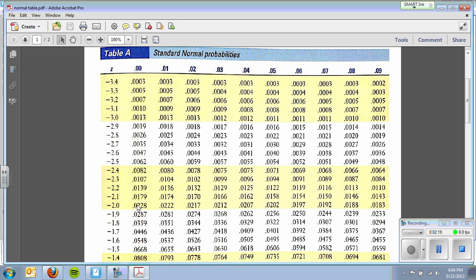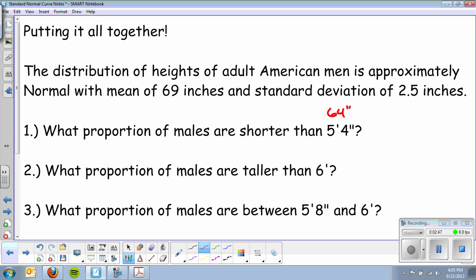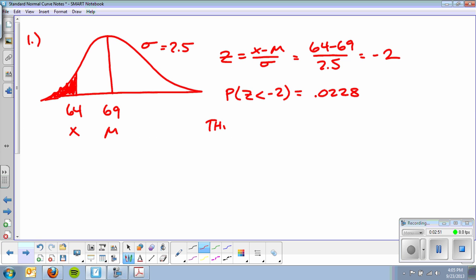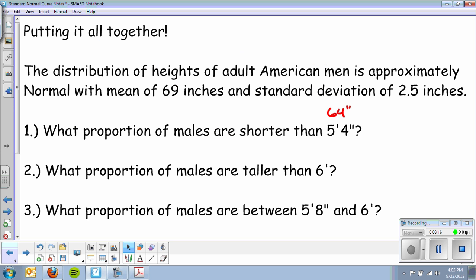Step three, look up in my table. So I'm going to go to my table, I'm going to locate negative 2. Negative 2.0, and that happens, here's my table, I scan down on the negative, negative 2.0. 0.0228. So probability that z was less than negative 2 was 0.0228. And then I just write a sentence in the context. It says what proportion of males, the proportion of males shorter than 5 foot 4 is 0.0228. That's it, there's my four-step process.